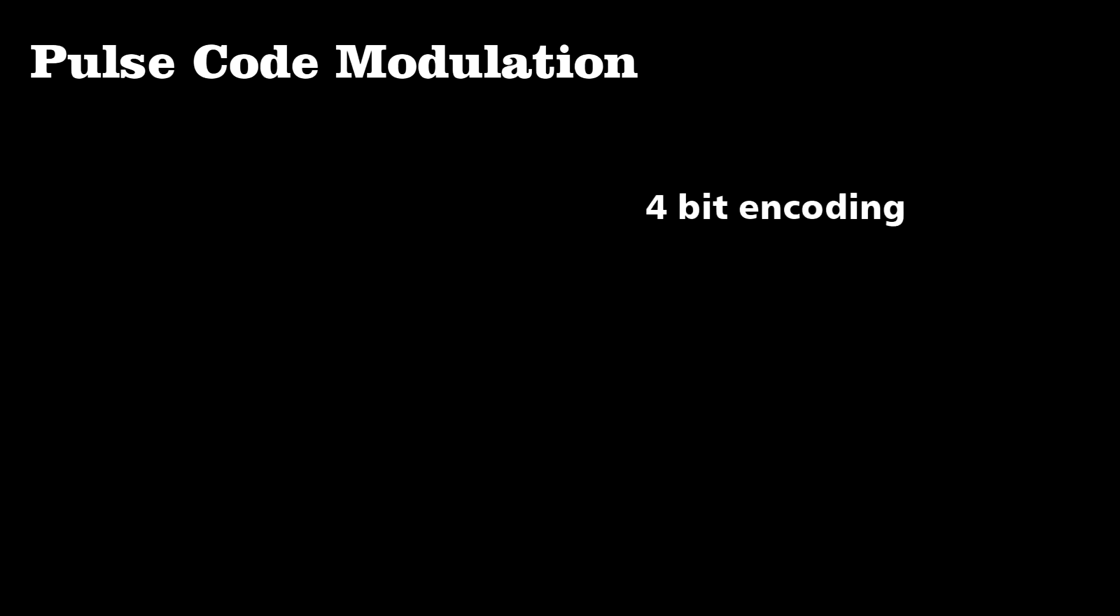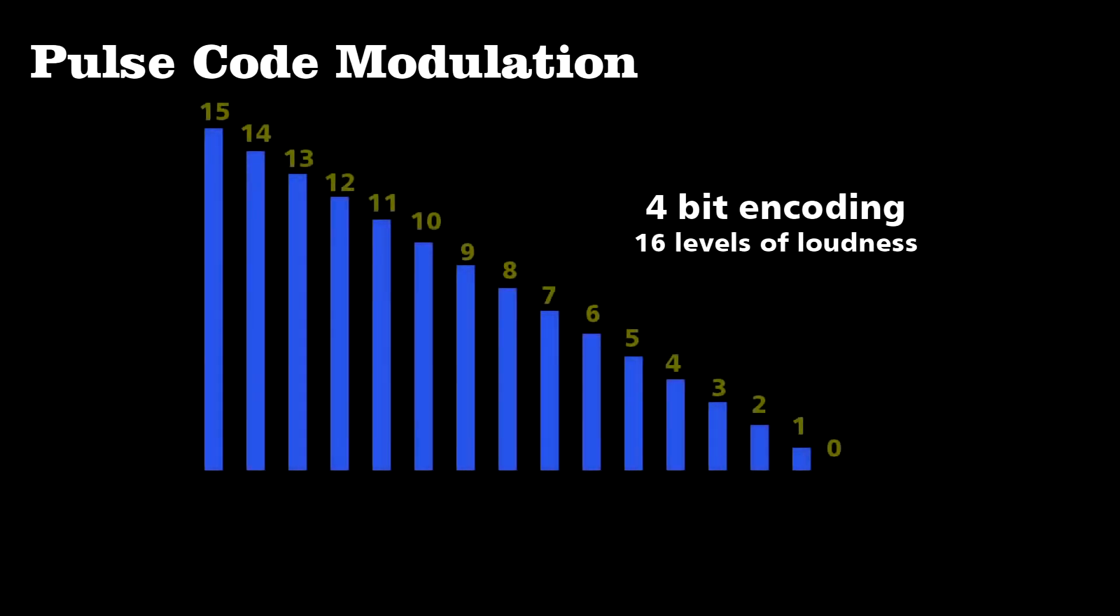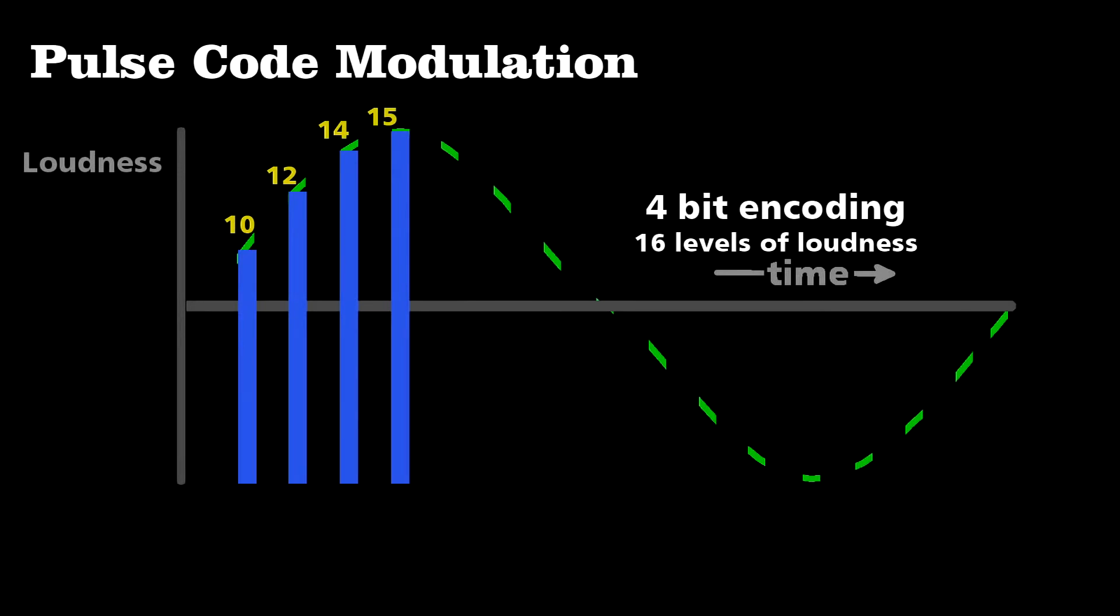For example, I'll use four bits, which means I have 16 possible values for the loudness. So the first four sections of the signal could be approximated by about 10, 12, 14, and 15.